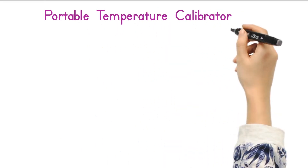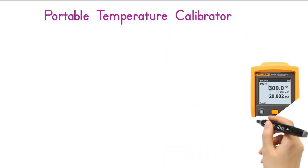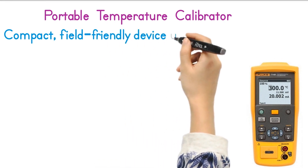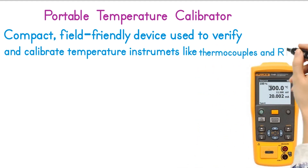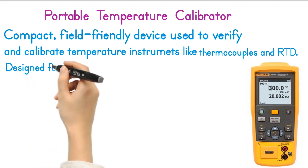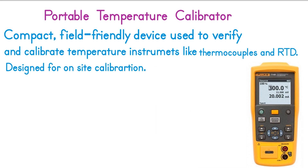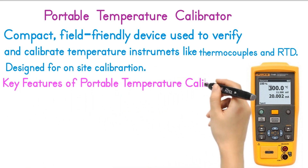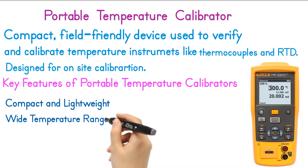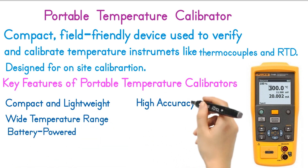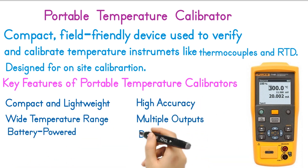Portable Temperature Calibrator. A portable temperature calibrator is a compact, field-friendly device used to verify and calibrate temperature instruments like thermocouples, RTDs, and other temperature measurement instruments. These calibrators are designed for on-site calibration. Some key features of portable temperature calibrators are: compact and lightweight, wide temperature range, battery-powered, high accuracy, multiple outputs, and digital display.